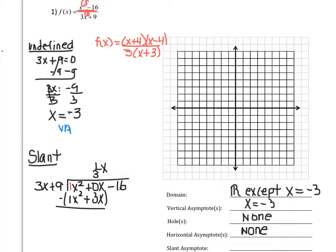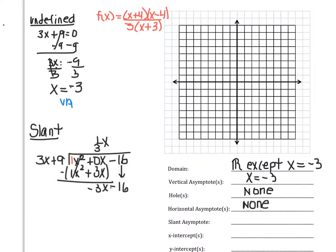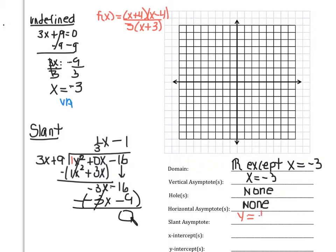We subtract, and this becomes negative 3x. Bring down the minus 16. Now how many times can 3x go into negative 3x? Negative 1 times. So minus 1. We multiply: negative 3x minus 9. And we subtract. Now this remainder is irrelevant because we want the slant asymptote. So when we write the equation we always write it with y equals. So the slant is y equals 1 third x minus 1.